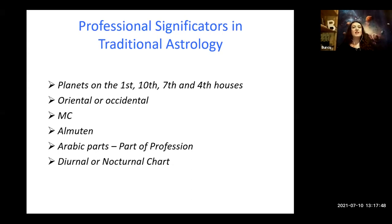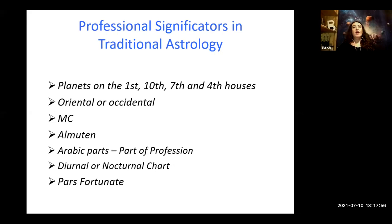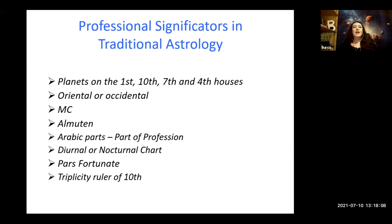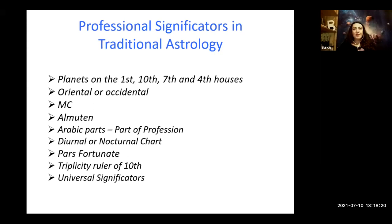All Ptolemaic aspects apply here. If we have a nocturnal chart, we should also consider the planet which will make the first aspect with the Part of Fortune. Another rule from Schoener says to check the first triplicity ruler of the 10th house. So far I have talked about a lot of rules, and I know sometimes it is confusing. It's not an easy job to find the professional significator in a chart using traditional methods. After we go over these rules, we keep them in mind as we analyze the chart.